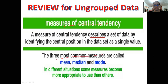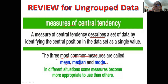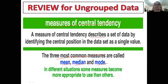There are three most common measures under the measures of central tendency: we have the mean, median, and mode. In different situations, some measures become more appropriate to use than others. For example, if there are extreme values, you cannot use the mean — you can use instead the median or mode. Since the median is more popular than the mode, it's better to use the median when there are extreme values in your given set of data.